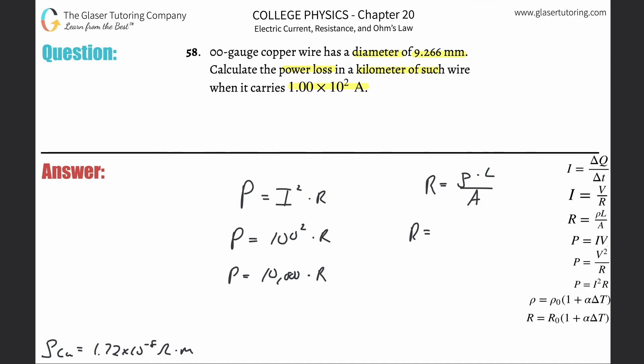So we need to know the resistivity of copper, which we do. We just look that up. That's going to be 1.72 times 10 to the minus 8. The length, they told us a kilometer, but we need that in meters. So that's a thousand meters. So plug that in.